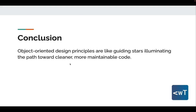In conclusion, object-oriented design principles are like guiding stars illuminating the path towards cleaner, more manageable code. By adhering to these principles — ensuring classes have single responsibilities, making code open for extension but closed for modification, segregating interfaces, or inverting dependencies — developers can craft robust, flexible, and easier-to-understand software. Just as a well-designed building stands the test of time, so does well-designed code. By embracing these principles, developers can create software that meets current needs and adapts gracefully to future challenges.